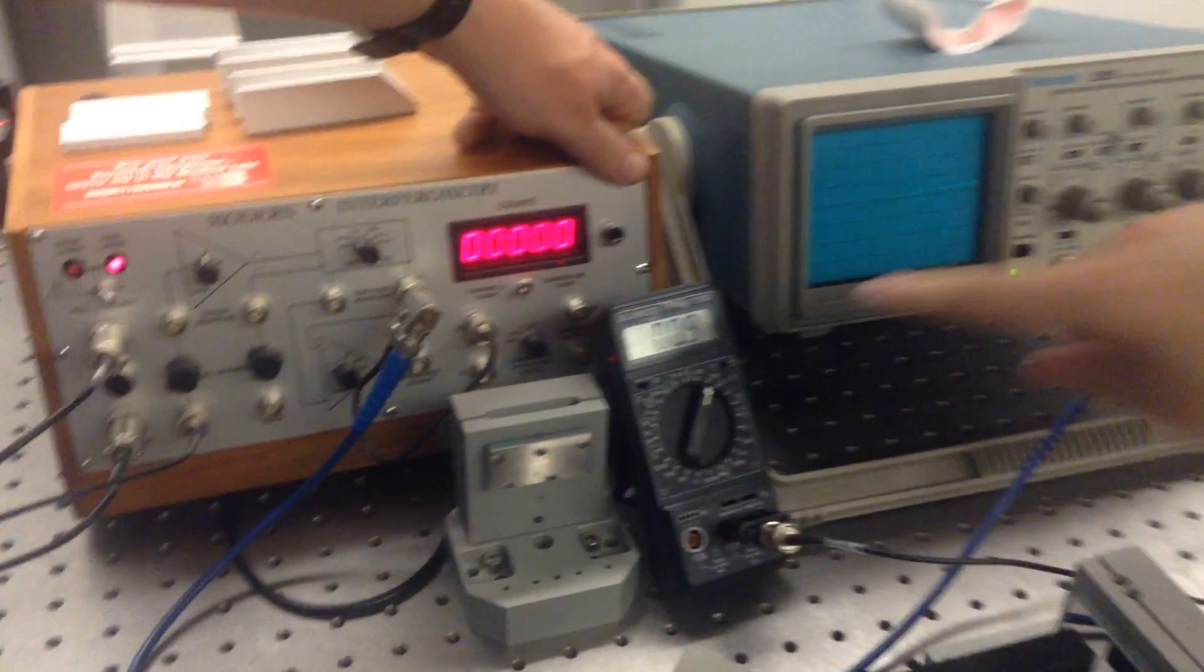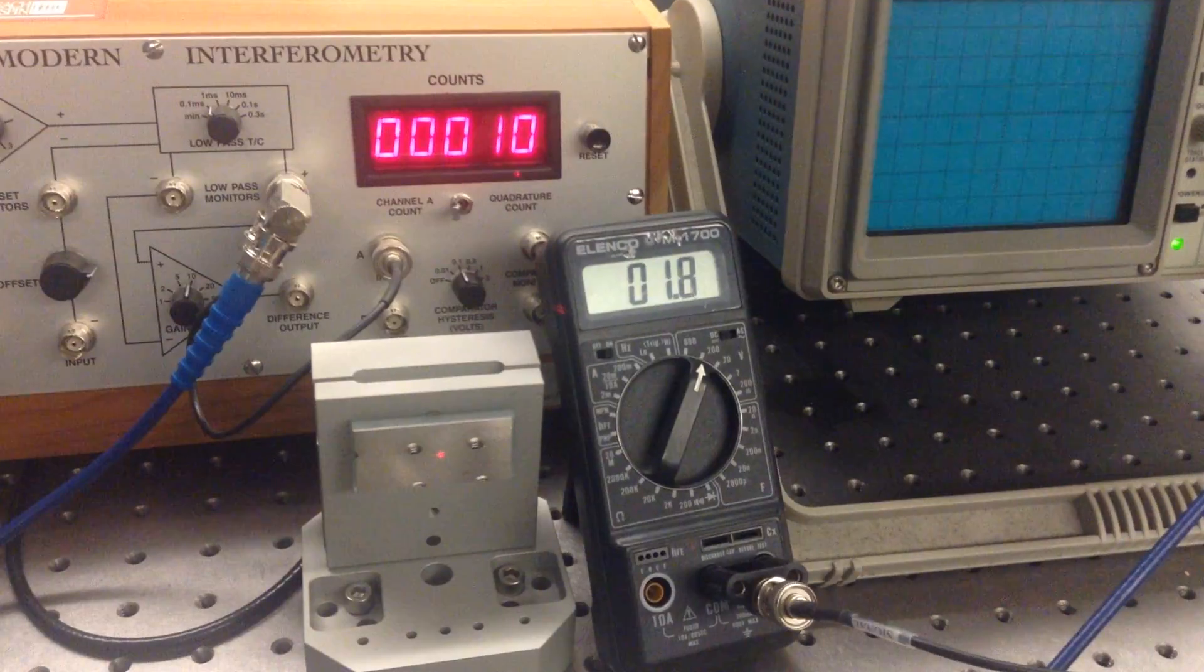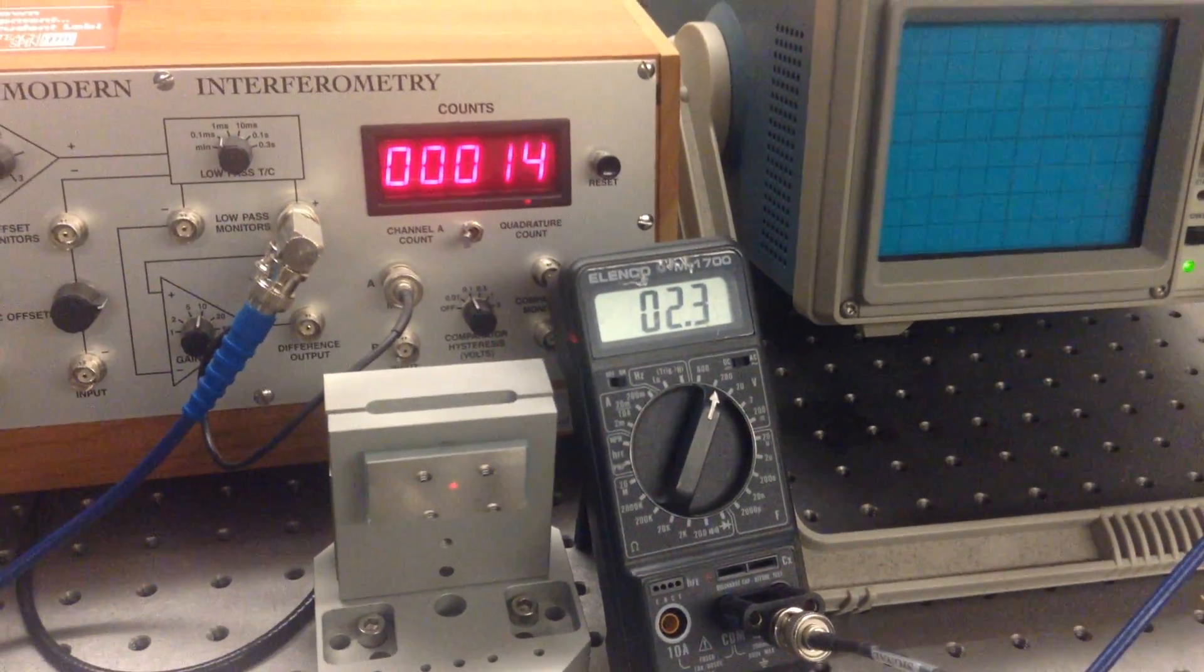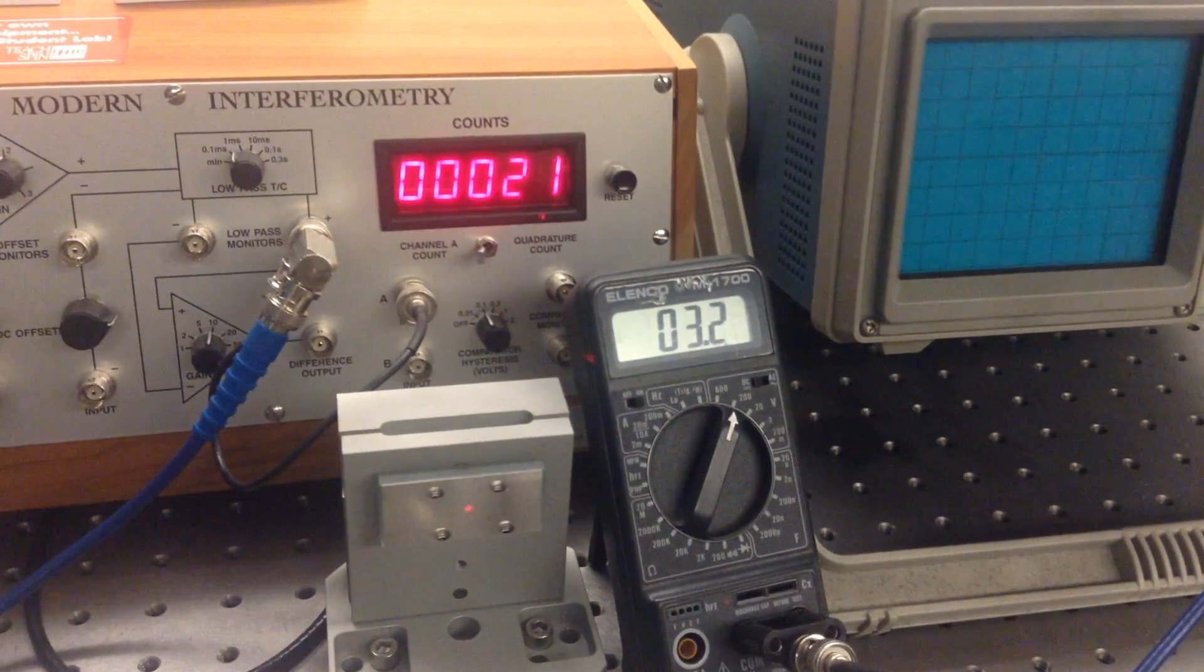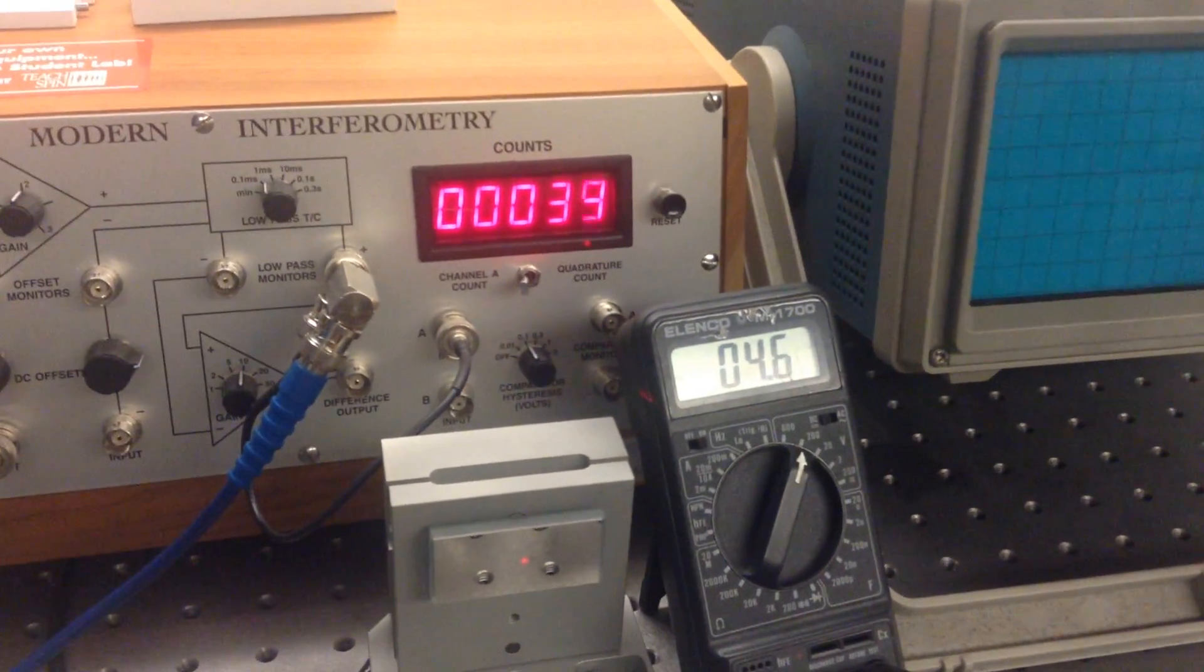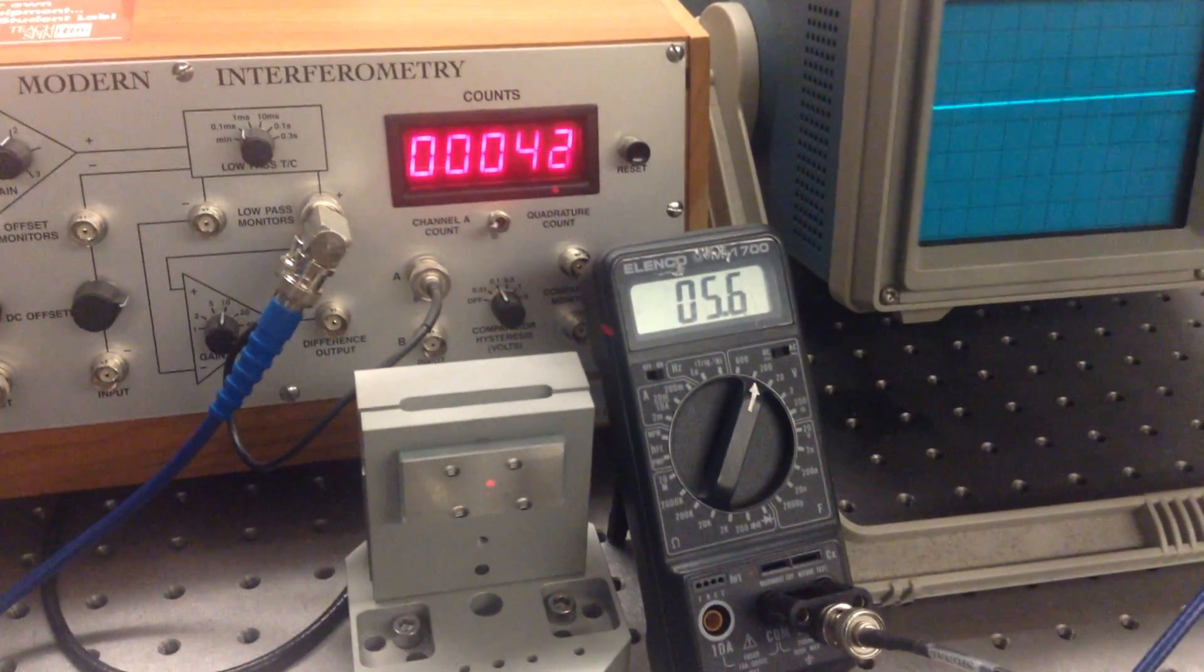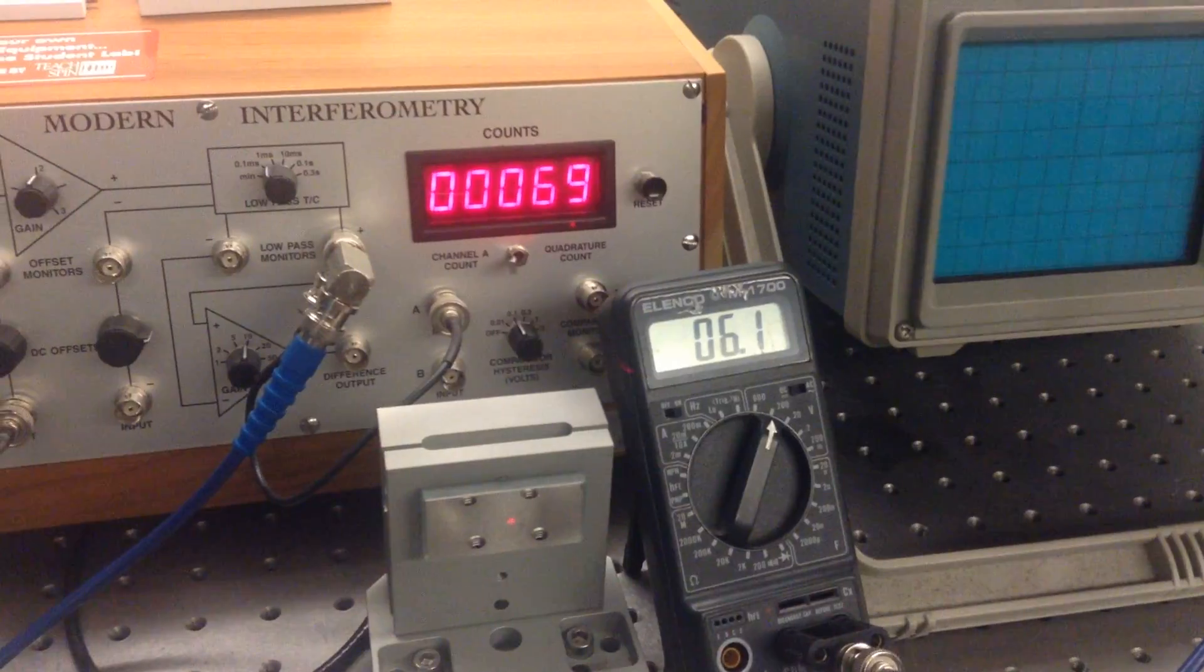Alright, so right now we're starting at 0.9, and as I push this plunger in slowly, you're going to see that I'm changing the amount of volts and I'm also increasing the number of counts on my light sensor. So then once I go all the way through, I'm going to have a reading of 6, oh that was a 6, 6.1. I screwed that up.